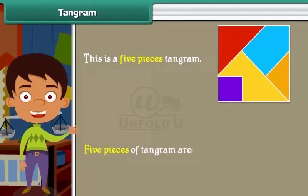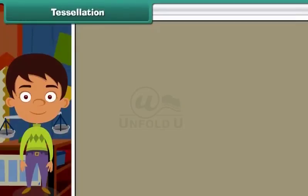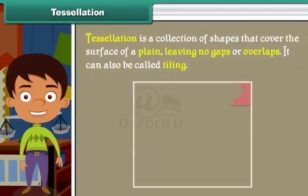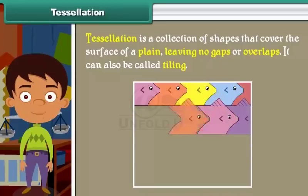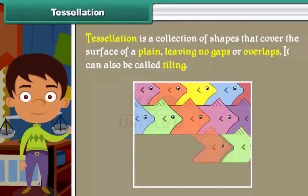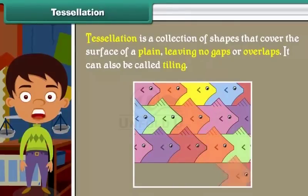Tessellation. Tessellation is a collection of shapes that cover the surface of a plane, leaving no gaps or overlaps. It can also be called tiling.